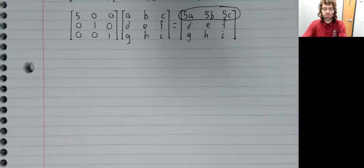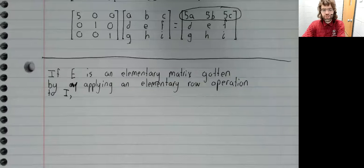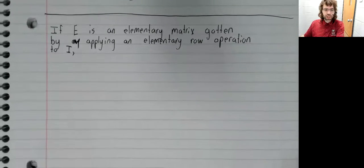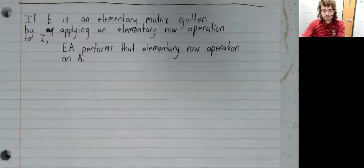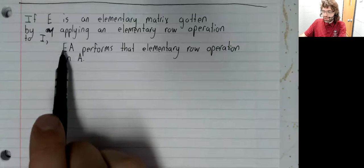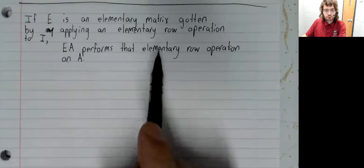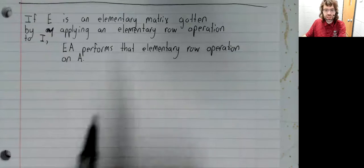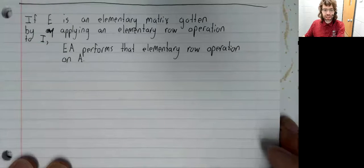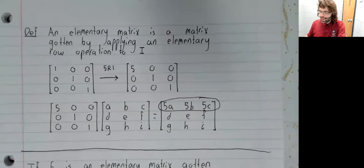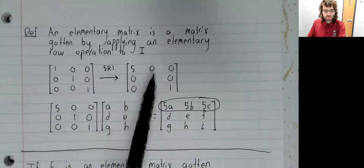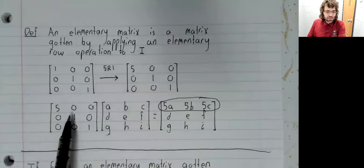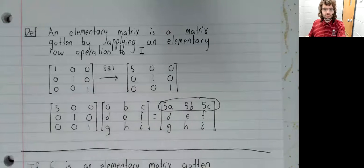Turning that observation into a theorem: if E is an elementary matrix, gotten by applying an elementary row operation to the identity, then multiplying on the left by the elementary matrix performs the same elementary row operation that was used to define it. Again, we saw that above — the elementary row operation of multiplying the first row by five created this elementary matrix, and when we multiply by this elementary matrix, it multiplies the first row by five.